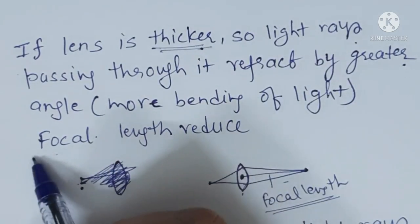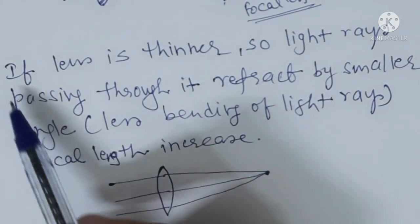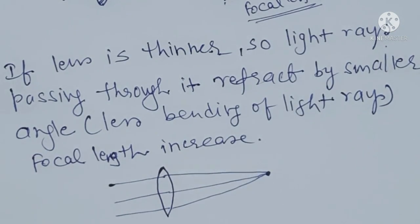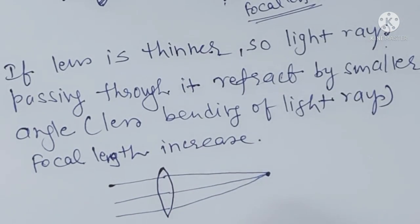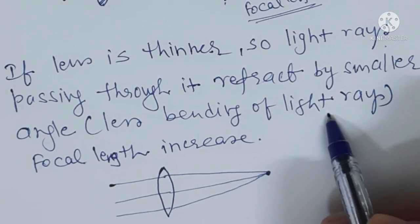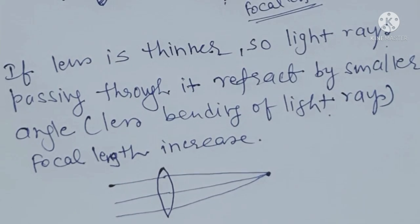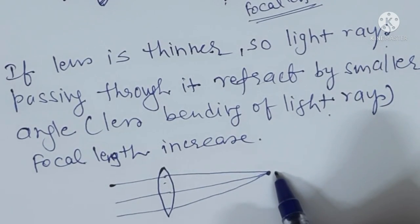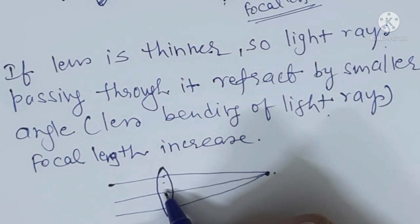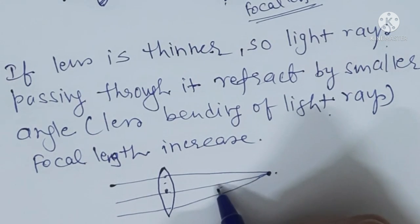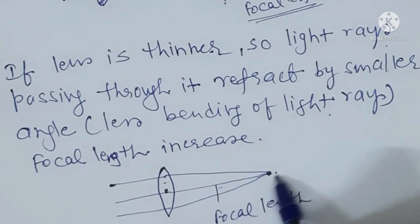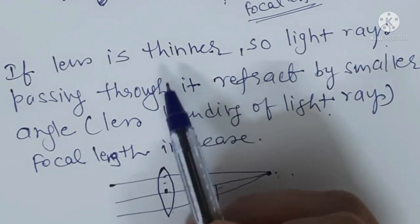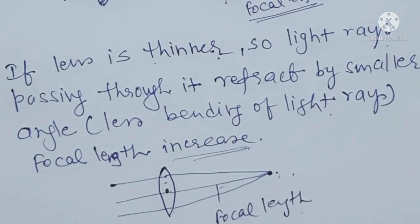Ab doosra case dekhte hain — agar lens thinner hai. Toh us waqt jo light rays uske through pass ho rahi hain, woh bend karti hain bahut hi small angle se. Toh jitne small angle se woh bend karengi, woh utna door ja ke meet karengi, kyunki bending bahut kam hai toh unko zyada travel karna padega to meet at a point. Toh ab yahan phir kya hoga — kyunki yahan phir jo light rays hain woh lens se door ja ke meet kar rahi hain, toh isi liye jo lens thinner hota hai uski focal length increase ho jati hai.